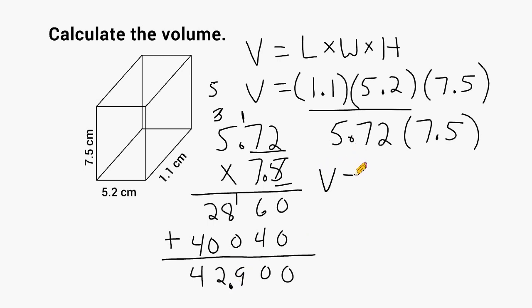So the volume of this rectangular prism is equal to 42 and 9 tenths cubic centimeters. We have to remember that volume is measured in cubic units, so we have to label this cubic centimeters.